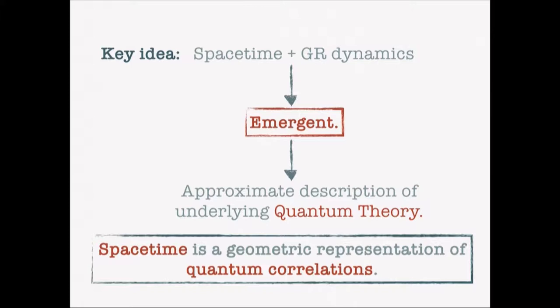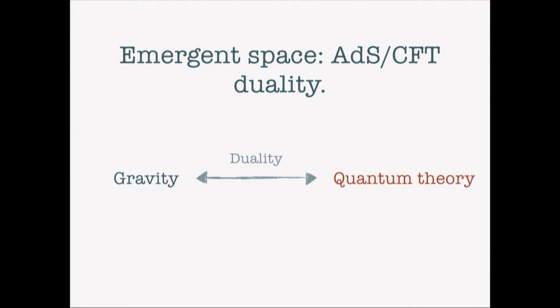What is spacetime made of? The slogan is: spacetime is built out of quantum mechanical correlations. It is a geometric representation of the way quantum degrees of freedom are correlated via the phenomenon of entanglement. This sounds both radical and obscure, and the point of the next 15 minutes is to explain what that means. Is there any understanding of how this emergent space picture can be made precise?